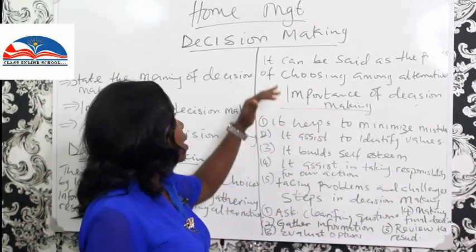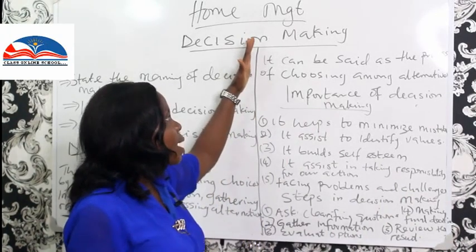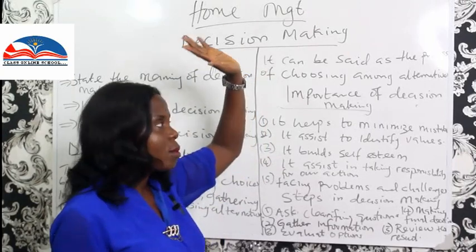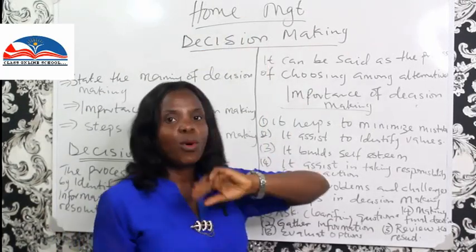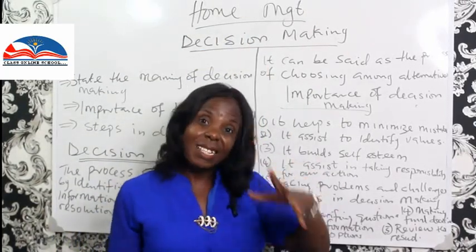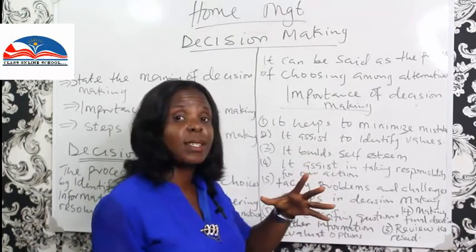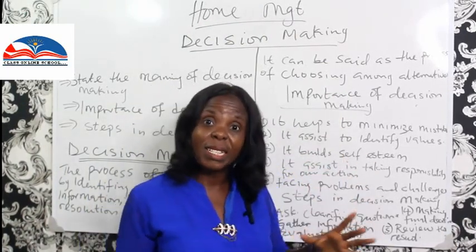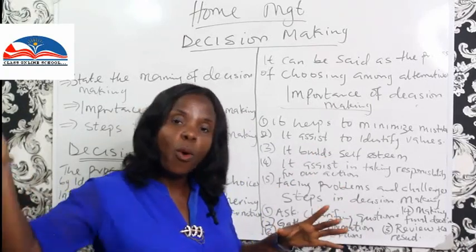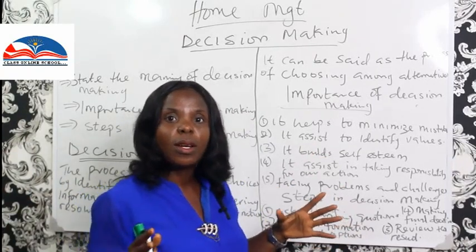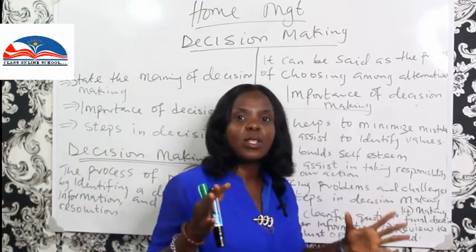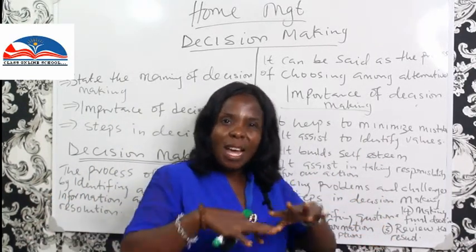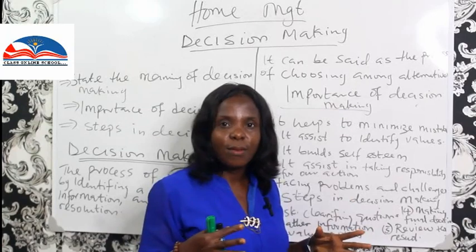Decision making can be defined as a process of choosing among alternatives. There are alternative choices — two or more — and you bring in these three, four, or five alternatives and gather information about each of them.